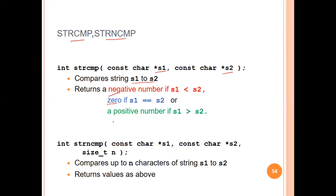strcmp returns one of three types of values: a negative number, zero, or a positive number. A negative number means the first string is less than the second string. Zero means the two strings are equal. A positive value means the first string is greater than the second string.